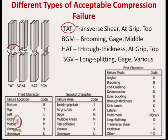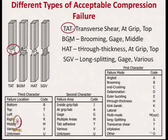Looking at the failure: T is transverse shear type failure, A means failure area is at the grip point, and T means its location is at top. If a similar failure occurred at the bottom, the terminology would be TAB — transverse shear, at grip, at bottom location.